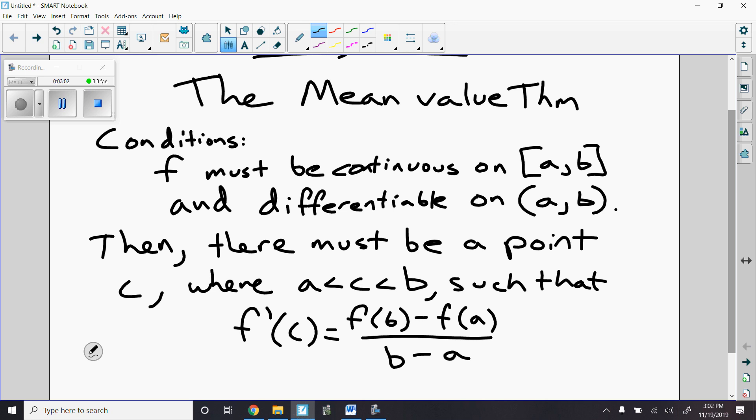Okay, so there must be a point C where C is between A and B such that F prime of C equals F of B minus F of A over B minus A. That F of B minus F of A over B minus A should look familiar because that's slope of a line. It's also the average rate of change on the interval A, B. So there's got to be a place where the instantaneous rate of change, F prime of C, matches the average rate of change, F of B minus F of A over B minus A.